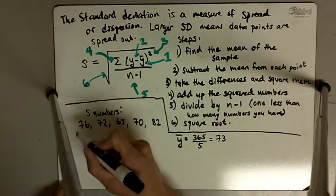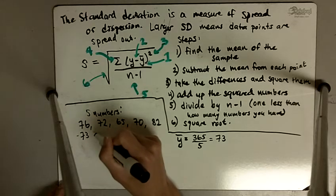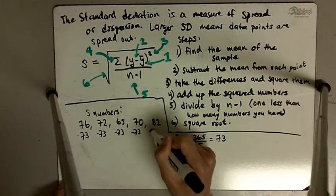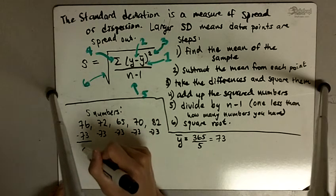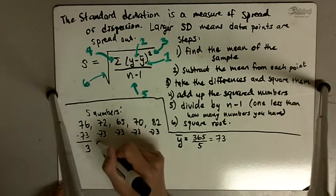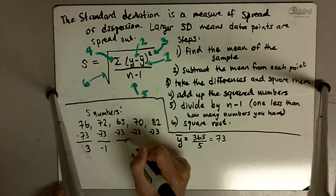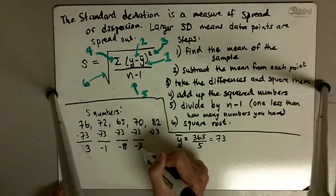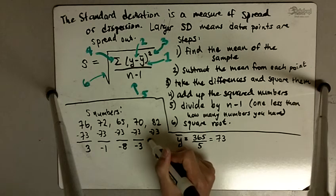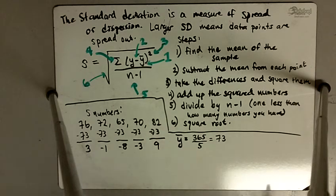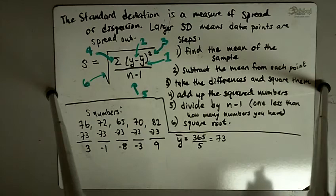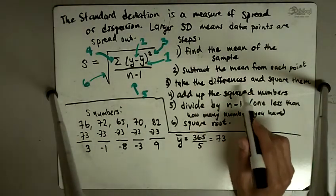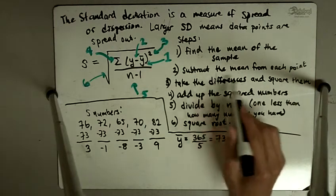So the mean is 73. So I'm going to subtract 73 from each of these points. So 76 minus 73 is 3. 72 minus 73 is negative 1. 65 minus 73 is negative 8. 70 minus 73 is negative 3. And 82 minus 73 is 9. So the next step after that, after we've taken the differences, next we take these differences and we square them.